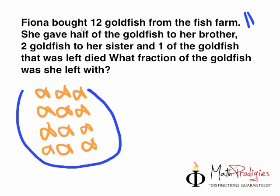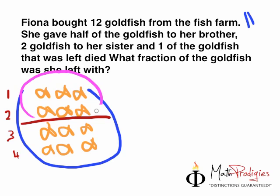The next line says she gave half of the goldfish to her brother. Half means you divide everything by 2. There are four rows of fish — 1, 2, 3, 4. So if you divide by 2, 4 divided by 2 gives you 2. So we draw a line here and she gave this half to her brother. Her brother was very happy.